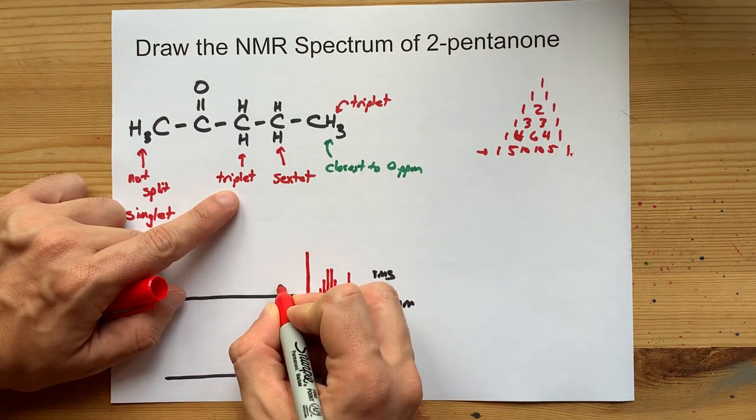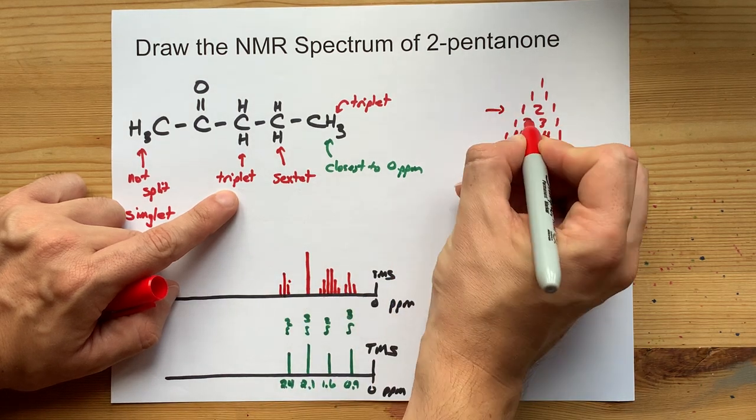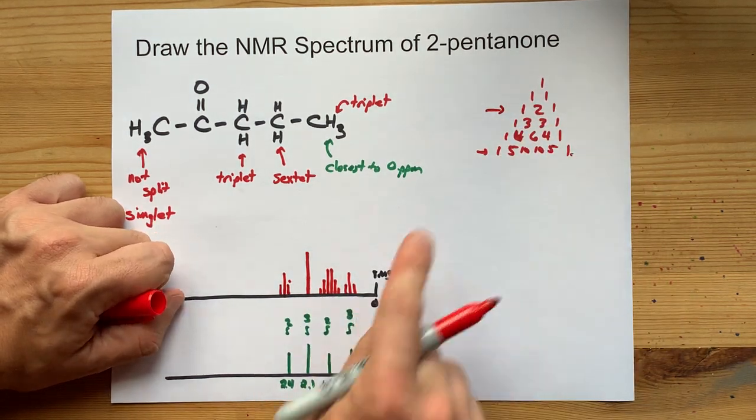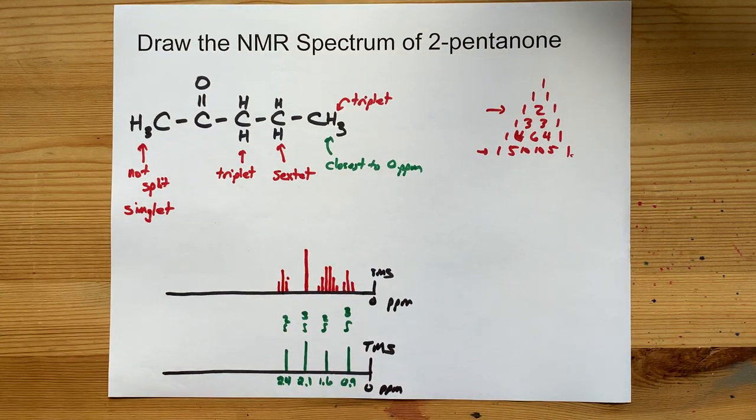Then I have the two hydrogens that were on the opposite side of the ketone group. They were split into a triplet. So I'll just give myself the 1, 2, 1 again. 1, 2, 1 for the row of Pascal's triangle that has three numbers in it. And there's my high resolution NMR spectrum.